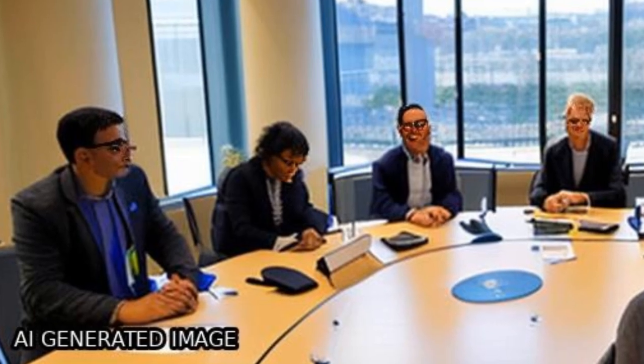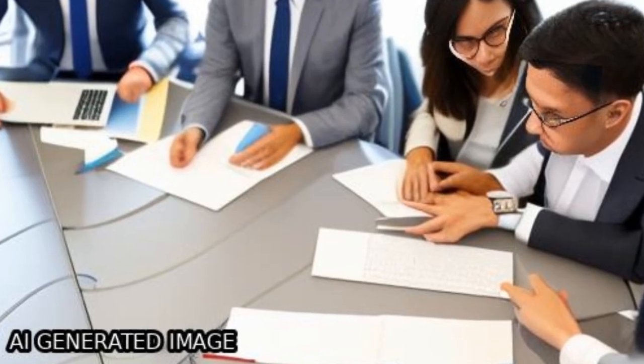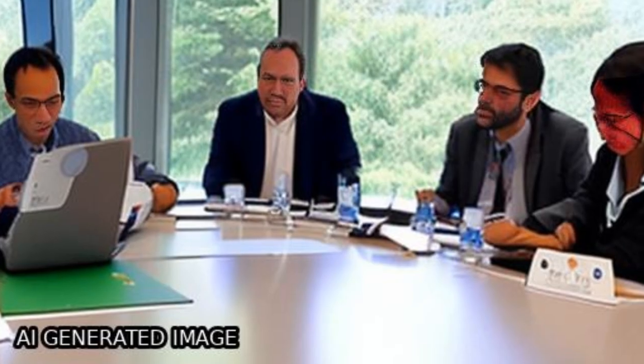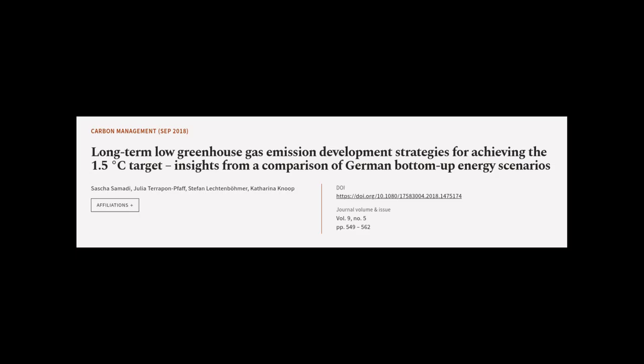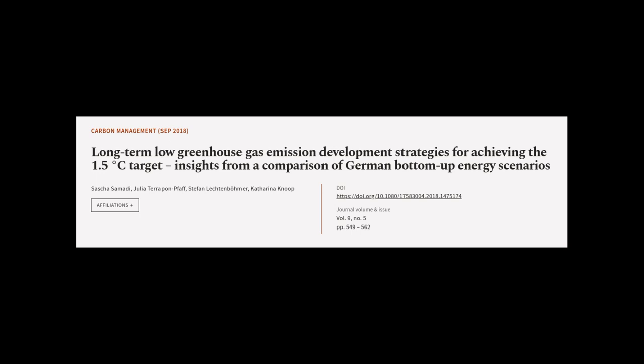Additionally, the pace of historical changes observed in Germany between 2000 and 2015 is insufficient to adequately contribute to both the 1.5 degrees Celsius and 2 degrees Celsius global temperature targets.